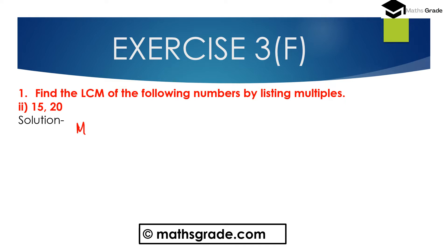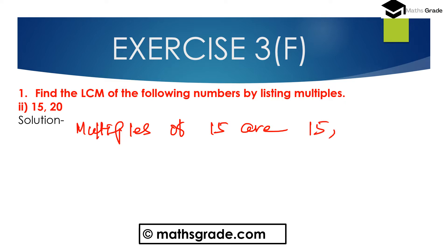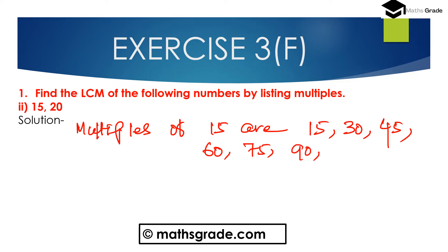So first find out the multiples of 15 and 20. Multiples of 15 are: 15, 30, 45, 60, 75, 90, 105, and so on.